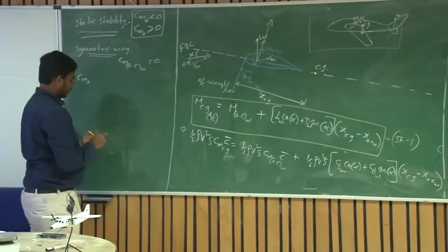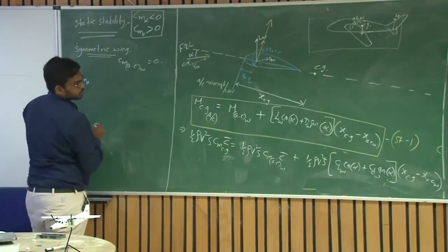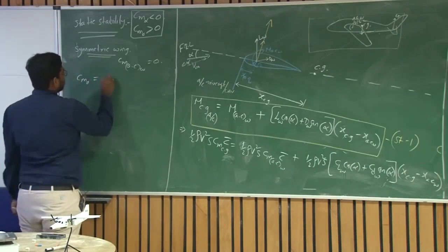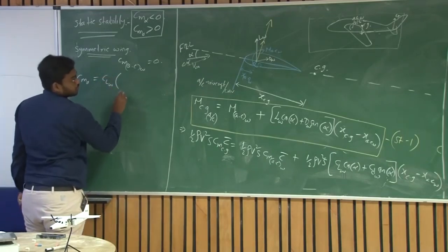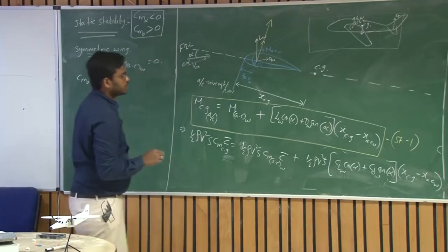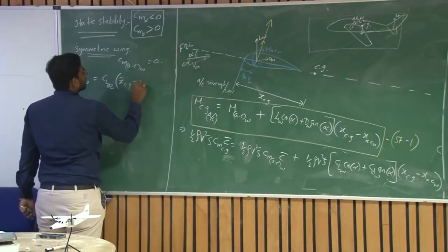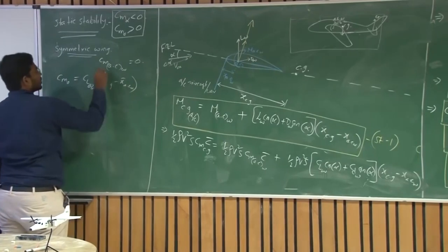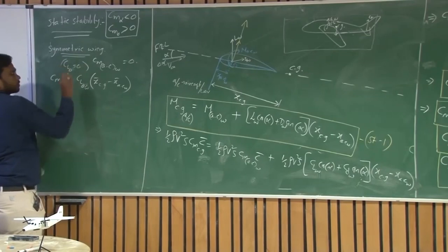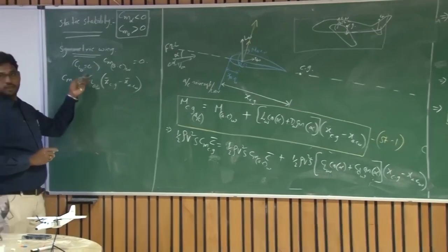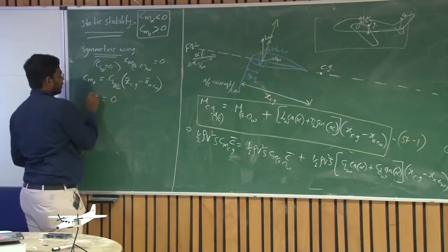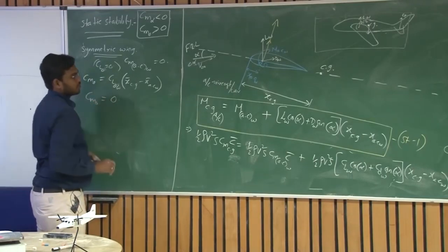From st3 and st4, what we have is CM_naught equals CM_ac plus CL_naught of wing into (x̄_cg minus x̄_ac of wing). For a symmetric wing, CM about the aerodynamic center is zero, and CL_naught — the lift coefficient at zero angle of attack — is also zero. So CM_naught is zero for a symmetric profile.